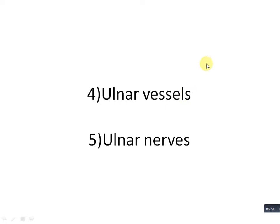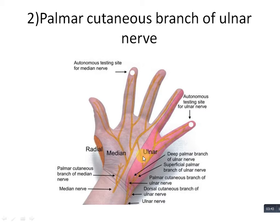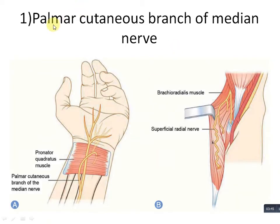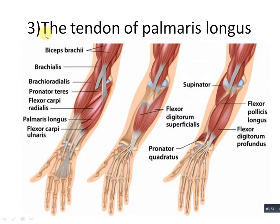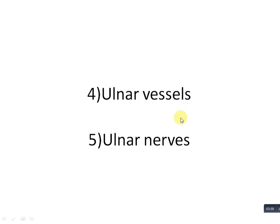The fifth structure is the ulnar nerve. Since the ulnar components are quite superficial, they pass over the flexor retinaculum. The ulnar vessels include the ulnar veins as well as the ulnar artery. To quickly revise: first, the palmar cutaneous branch of the median nerve; second, the palmar cutaneous branch of the ulnar nerve; third, the tendon of palmaris longus; and fourth and fifth, the ulnar vessels and ulnar nerve. Thank you and have a nice day.